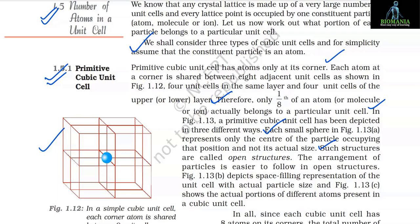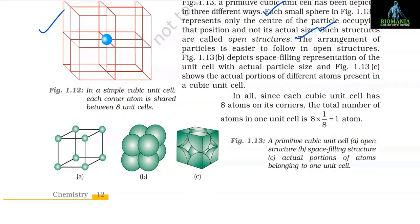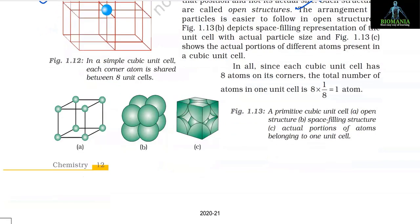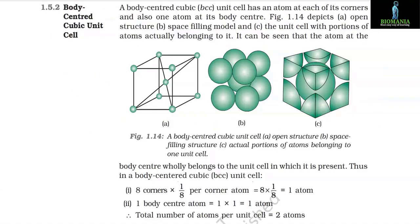In a primitive cubic unit cell, since each cubic unit cell has eight atoms on its corners, the total number of atoms per unit cell is 8 × (1/8) = 1 atom.